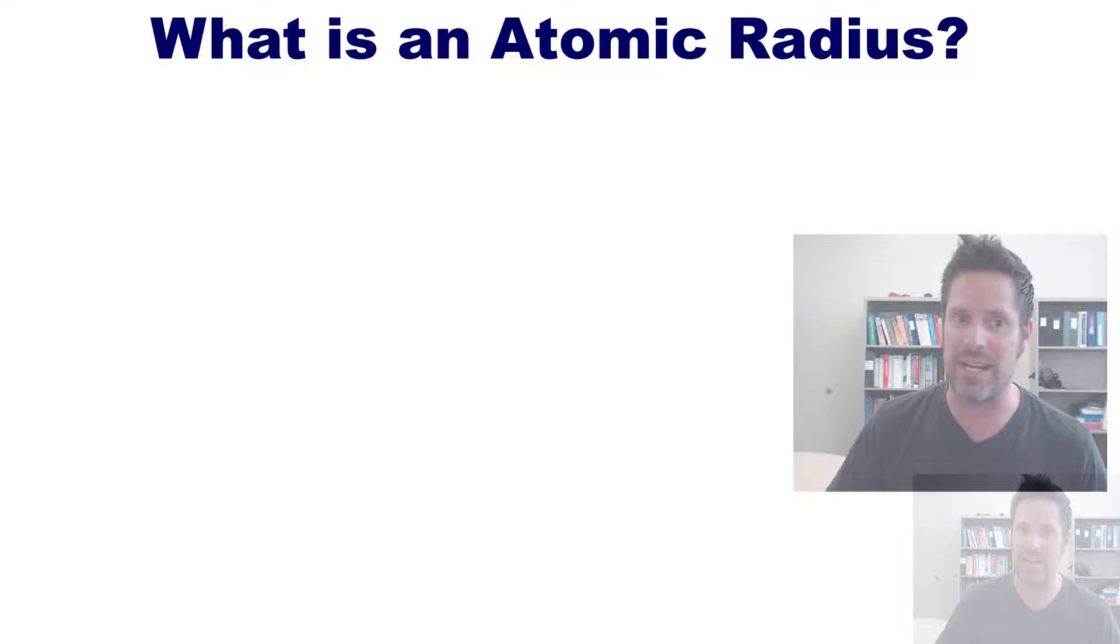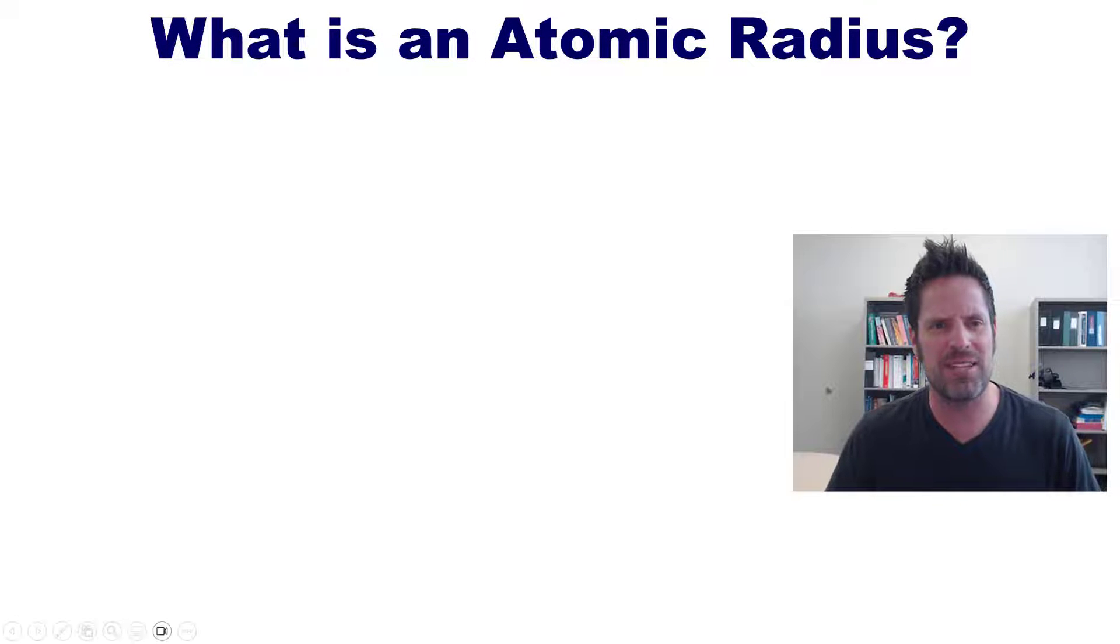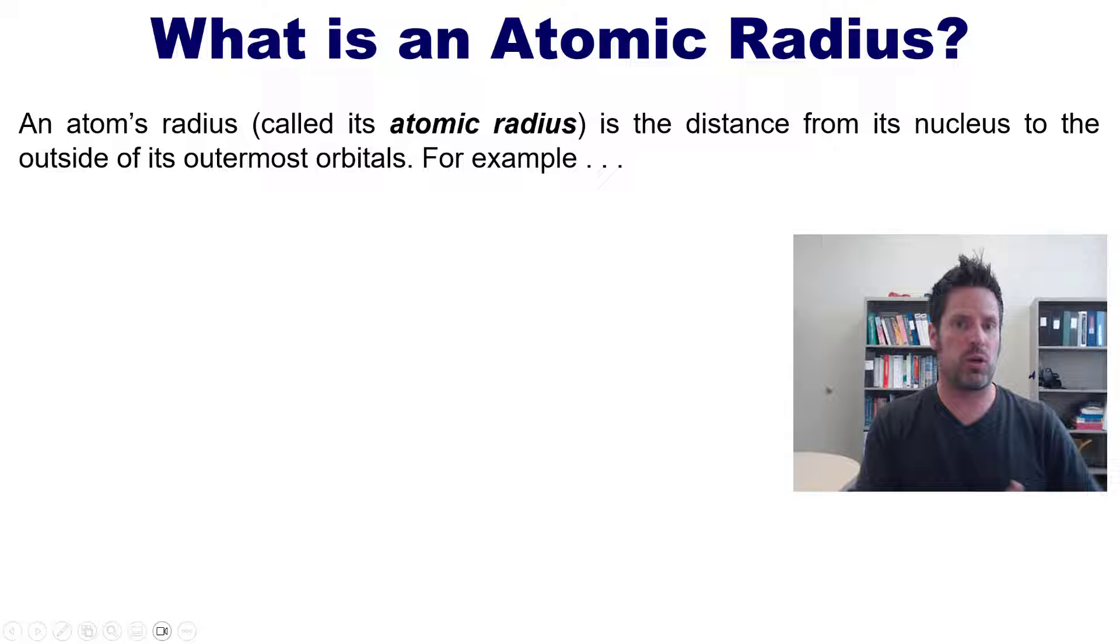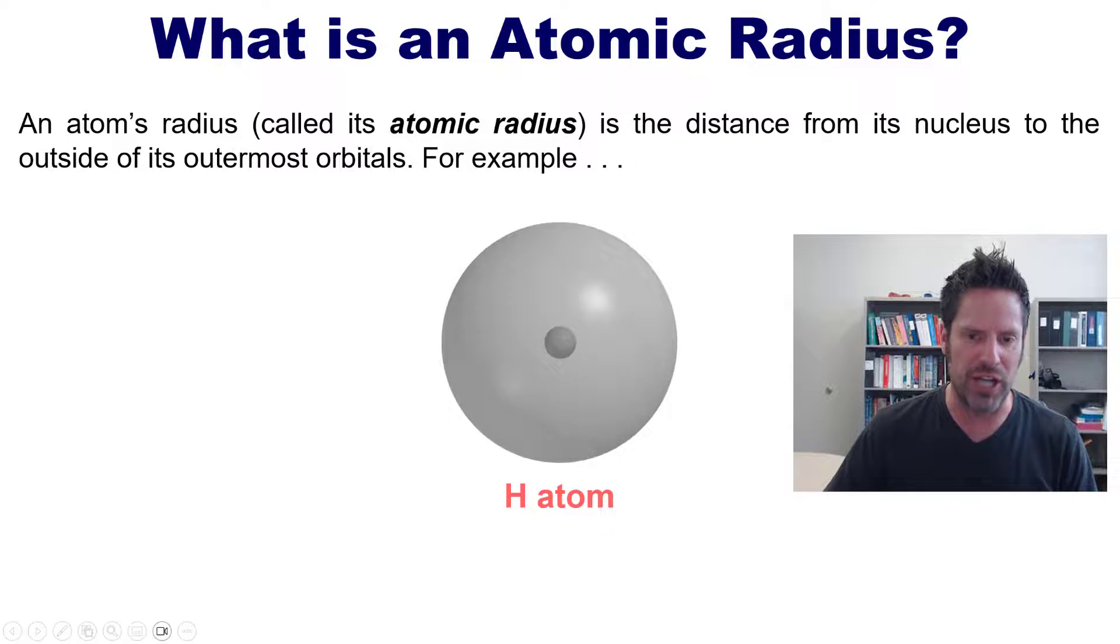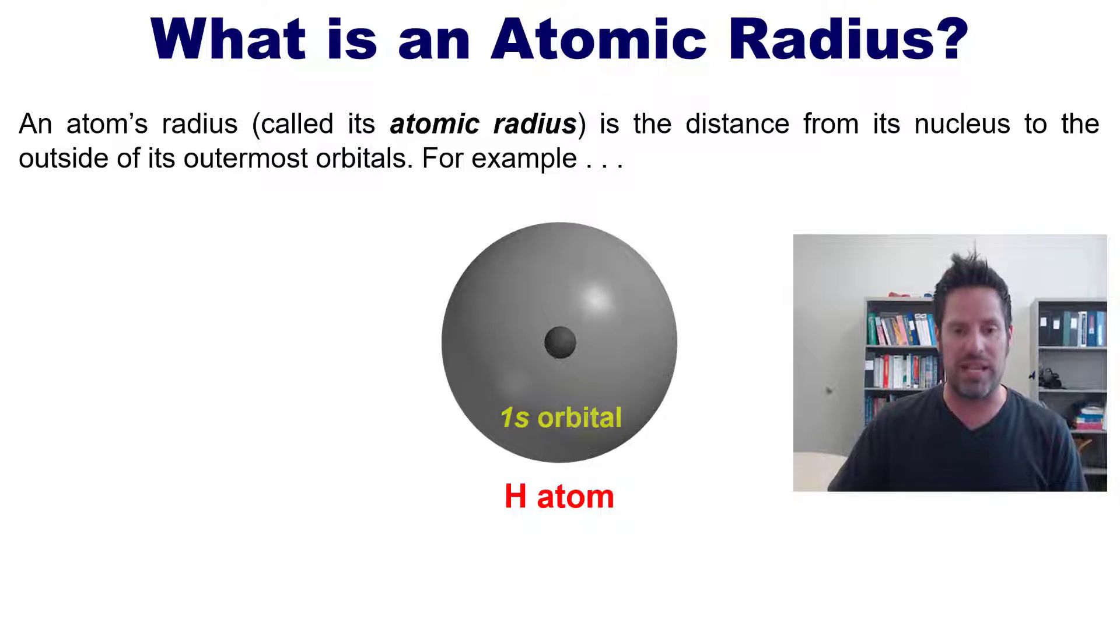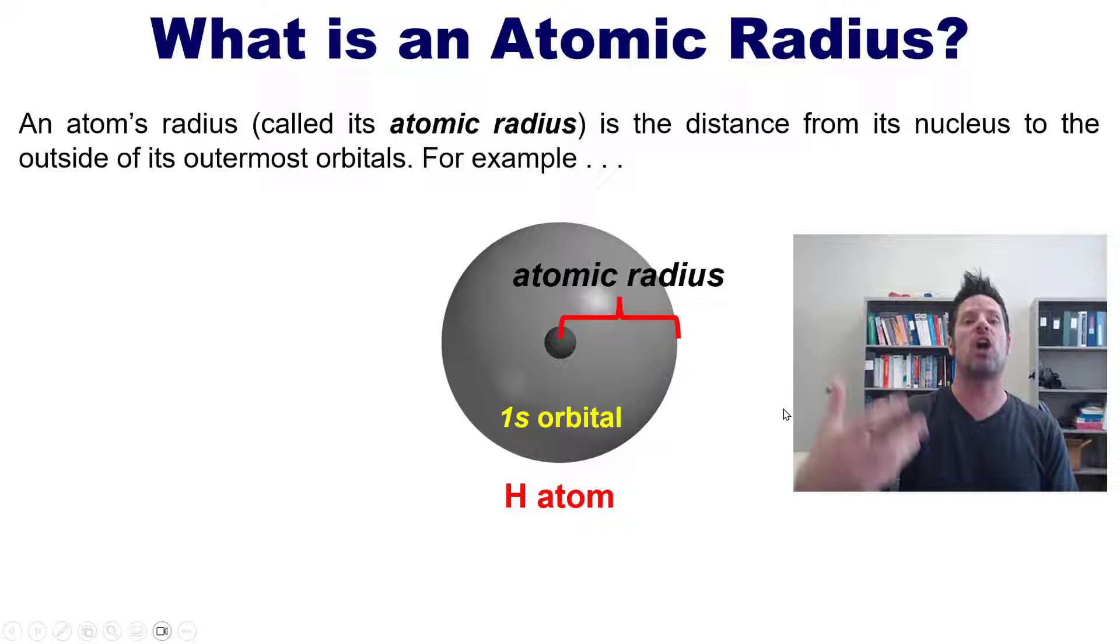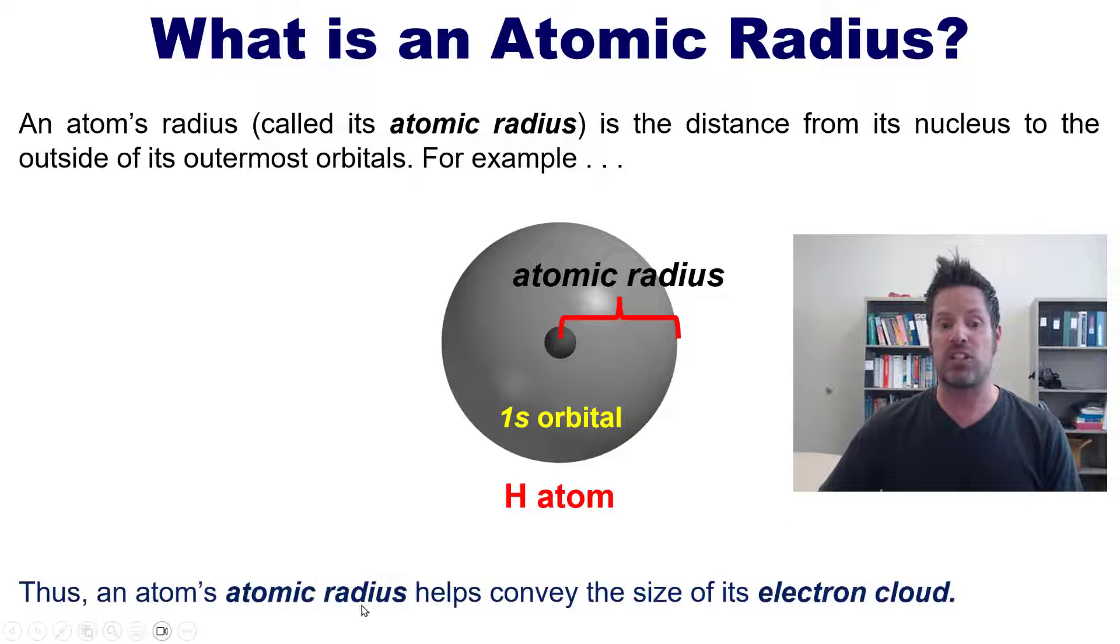Now that we know this general trend on size, we're going to move on to another topic: atomic radius. An atom's radius, also called its atomic radius, is the distance from its nucleus to the outside of its outermost orbital. For example, in a simple hydrogen atom, its only filled orbital is a 1s orbital. The distance from its nucleus to the outermost edge of that orbital is called its atomic radius.